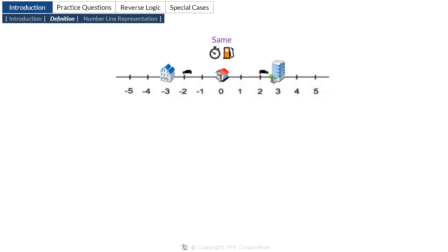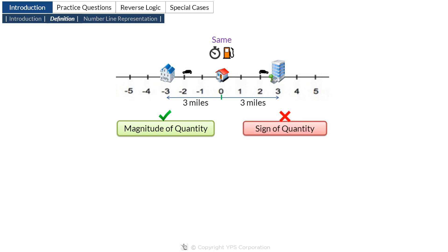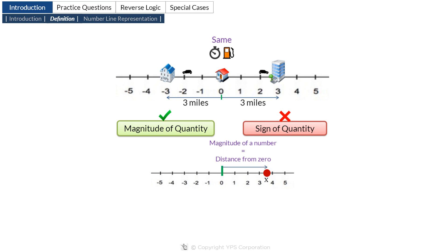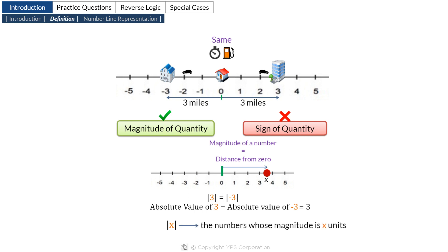The amount of fuel burnt depends only on the magnitude of the distance you travel, not on the direction in which you travel. This example illustrates that in many real life scenarios we are concerned only with the magnitude of a quantity and not with the sign of that quantity. On the number line the magnitude of a number is equal to the distance of that number from 0. We represent the idea that magnitude of 3 is equal to the magnitude of minus 3 as follows: the absolute value of 3 is equal to the absolute value of minus 3, which is equal to 3 units. In general, the absolute value of x means the numbers whose magnitude is x units, and because the magnitude of a number is always positive, the absolute value of x is always positive.